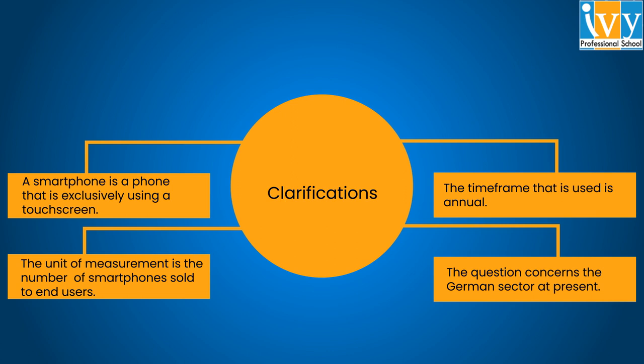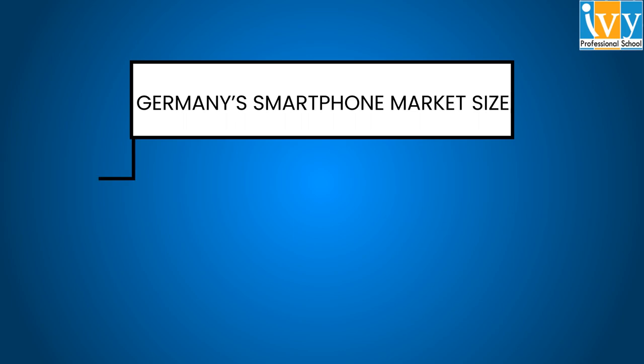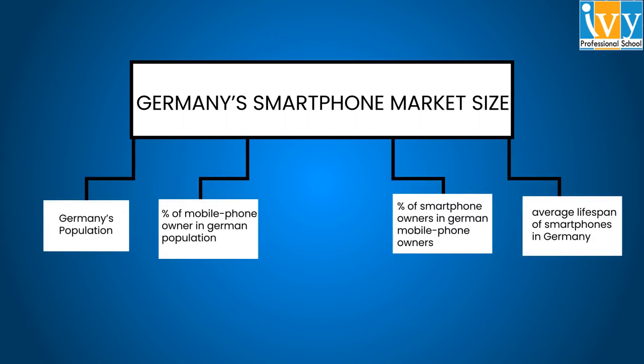Next, ask for a timeout and break down the problem into pieces small enough to anticipate reasonably. Every small piece has to be more convenient to estimate than the big piece. If you cannot estimate the small pieces, you are not breaking down enough or are doing it wrong. We can break down the number of smartphones sold to the end customer into four determinants: the size of the German population, the percentage of mobile phone owners within Germany, the percentage of smartphone owners within German mobile phone owners, and the average lifespan of smartphones. This graphical breakdown is known as a problem tree.